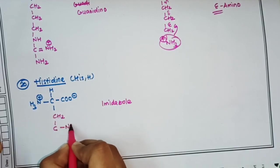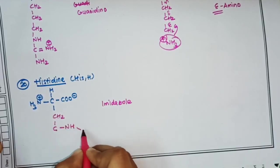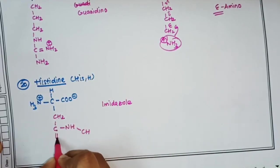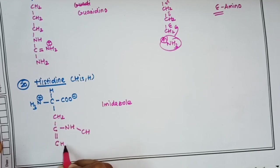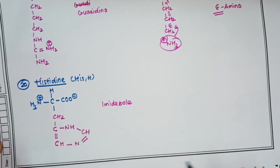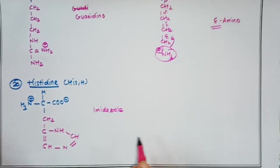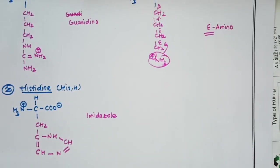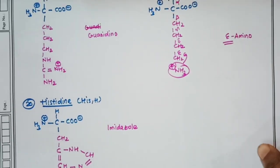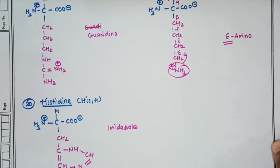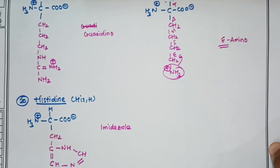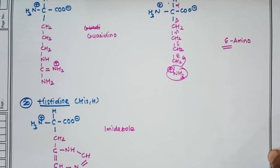The twentieth amino acid is histidine, whose R group is an imidazole group: –CH₂ attached to an imidazole ring (C–NH–CH=C–N=CH). I hope you understand — it is very easy to study these structures if you have dedication. Study hard and remember there is no shortcut for success. Thank you.